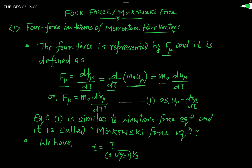The four-momentum P_mu is defined as m0 times u_mu, where u_mu is the velocity four-vector. So F_mu = d/d_tau (m0 * u_mu). Since rest mass m0 is constant, this becomes m0 * du_mu/d_tau. The velocity four-vector u_mu is defined as dx_mu/d_tau, where x_mu is the four-position vector. Substituting gives F_mu = m0 * d²x_mu/d_tau².